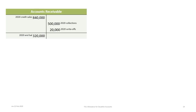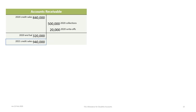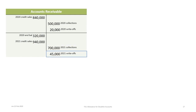We begin our 2021 accounting from where we ended in 2020, with a starting accounts receivable balance of $320,000. In 2021 the company had $940,000 in credit sales debited to accounts receivable, collections of $700,000 credited to accounts receivable, and $45,000 in write-offs, which credit accounts receivable and debit the allowance for doubtful accounts.